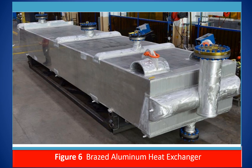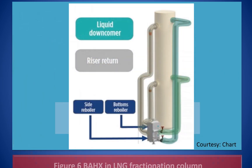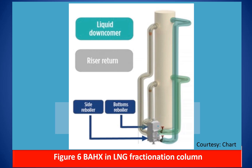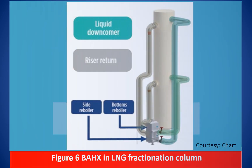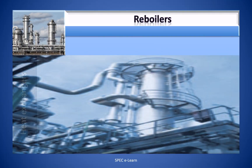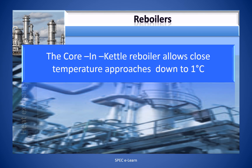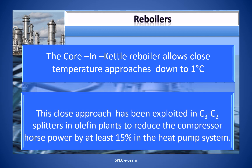This figure shows a fully assembled core in kettle brazed aluminum heat exchanger ready after fabrication for dispatch. Another example shows a core in kettle brazed aluminum heat exchanger installed in a natural gas liquid fractionation column, demonstrating how core in kettle technology has progressed and found new applications in cryogenic industries. The core in kettle reboiler allows close temperature approaches down to 1°C. This close approach has been exploited in C3 and C2 splitters and similar plants to reduce compressor horsepower by at least 15% in the heat pump system.